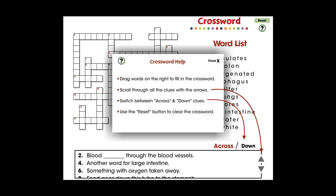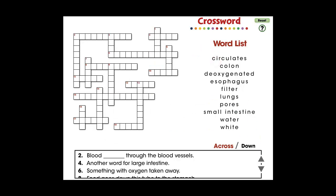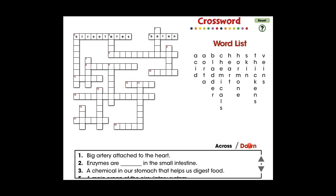In this crossword app, 19 vocabulary words are provided with across and down clues. For middle school, this app is great for vocabulary and comprehending all the words centered around the vocabulary in the topic of circulatory, digestive, and reproductive systems.